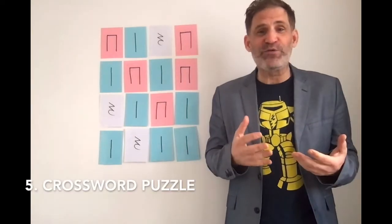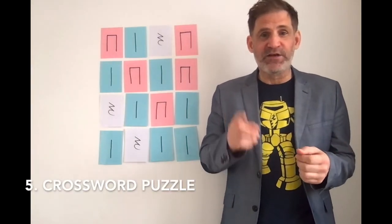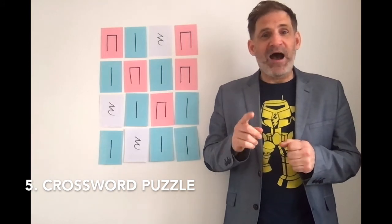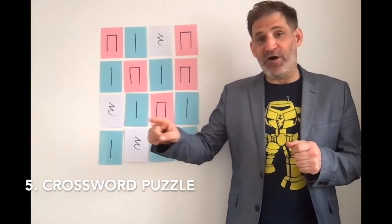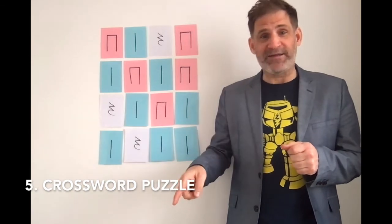You could also do a kind of musical crossword puzzle with a grid like this. So for example, I could say, I'm going to clap a rhythm that either goes across, down, or diagonal. Let's see if you can guess what the rhythm is.